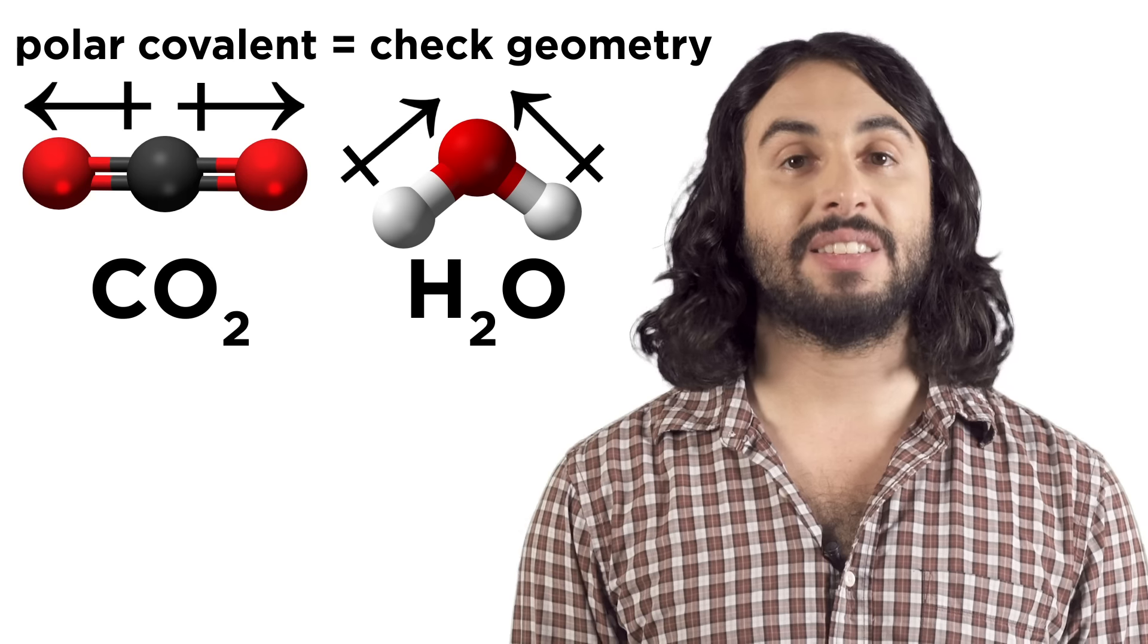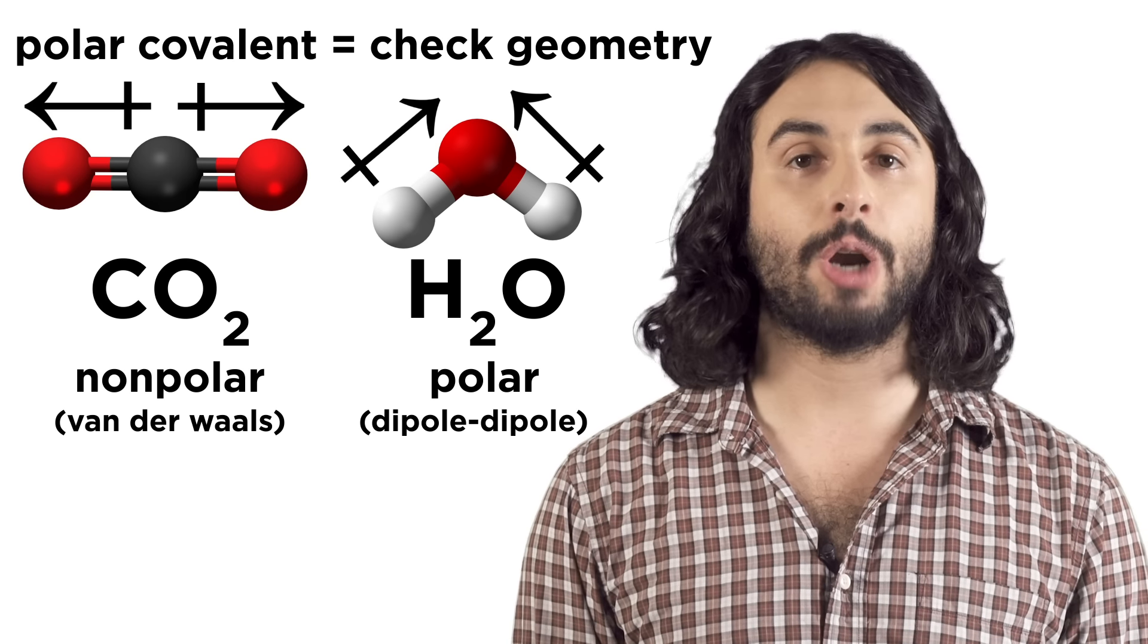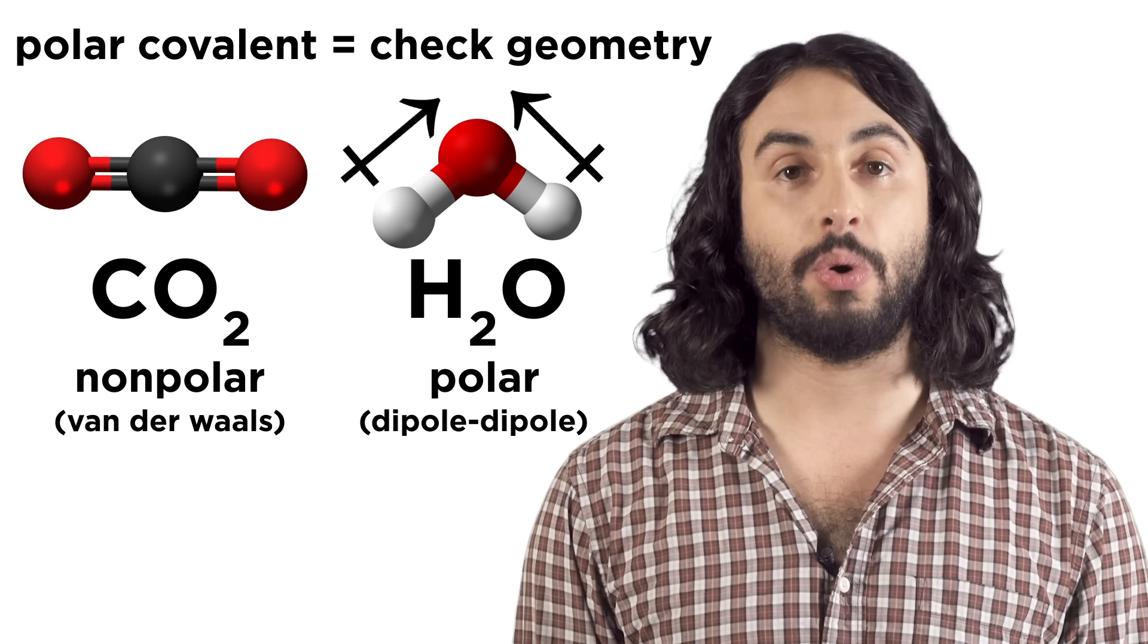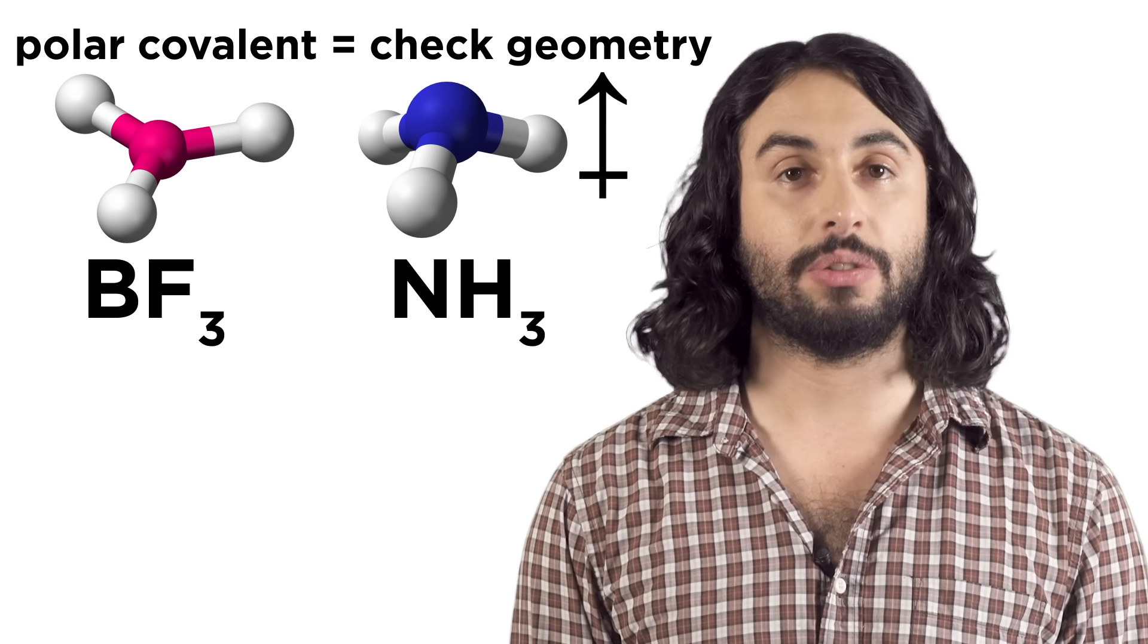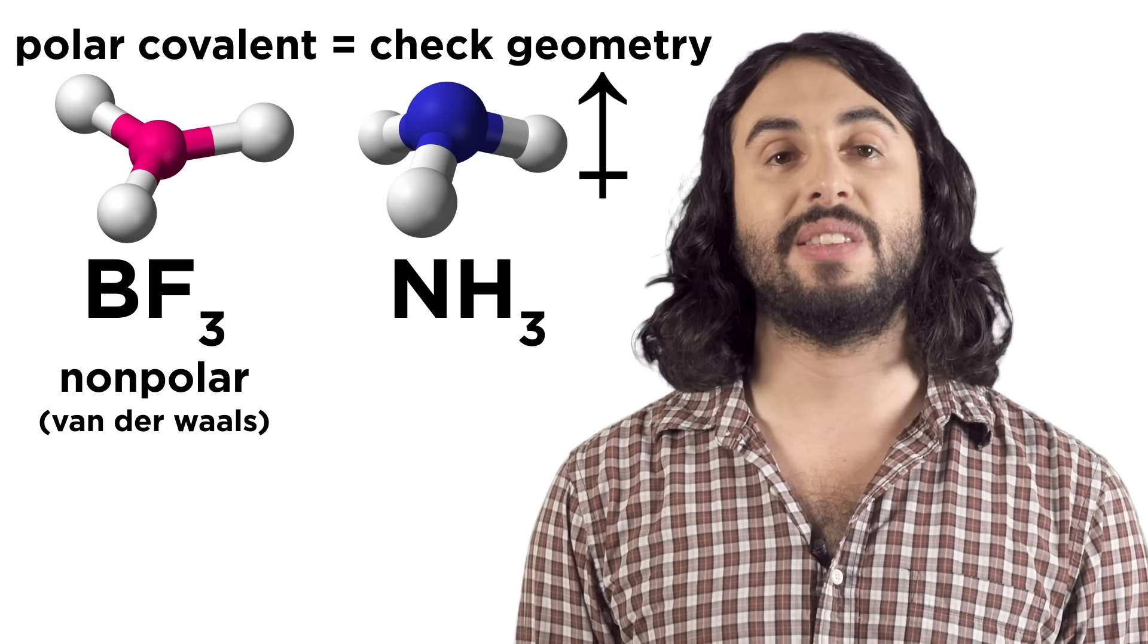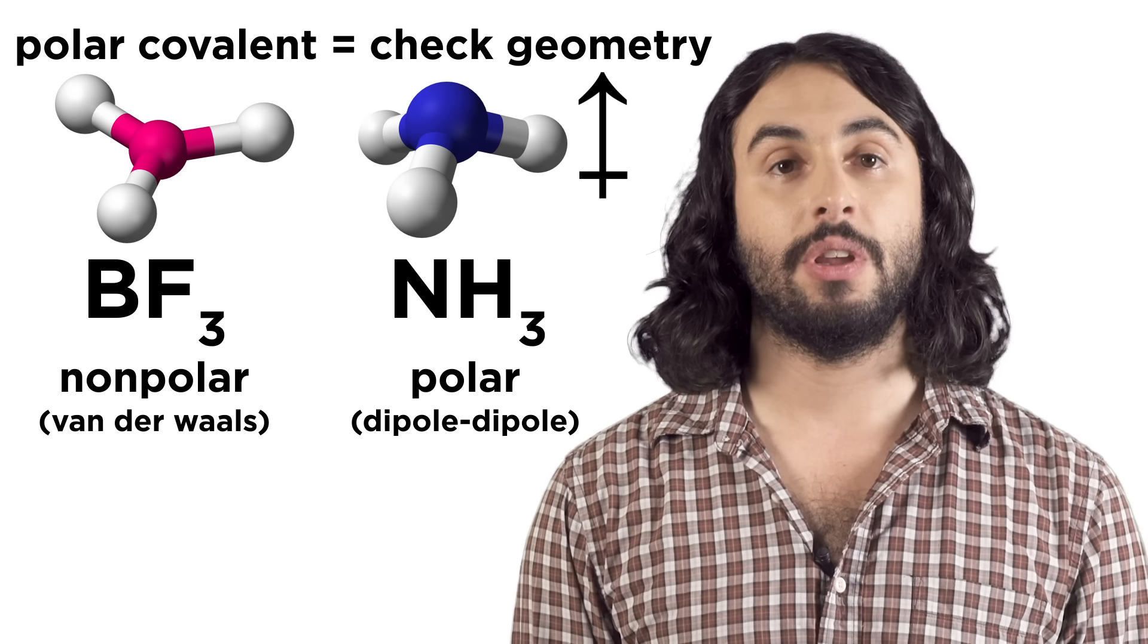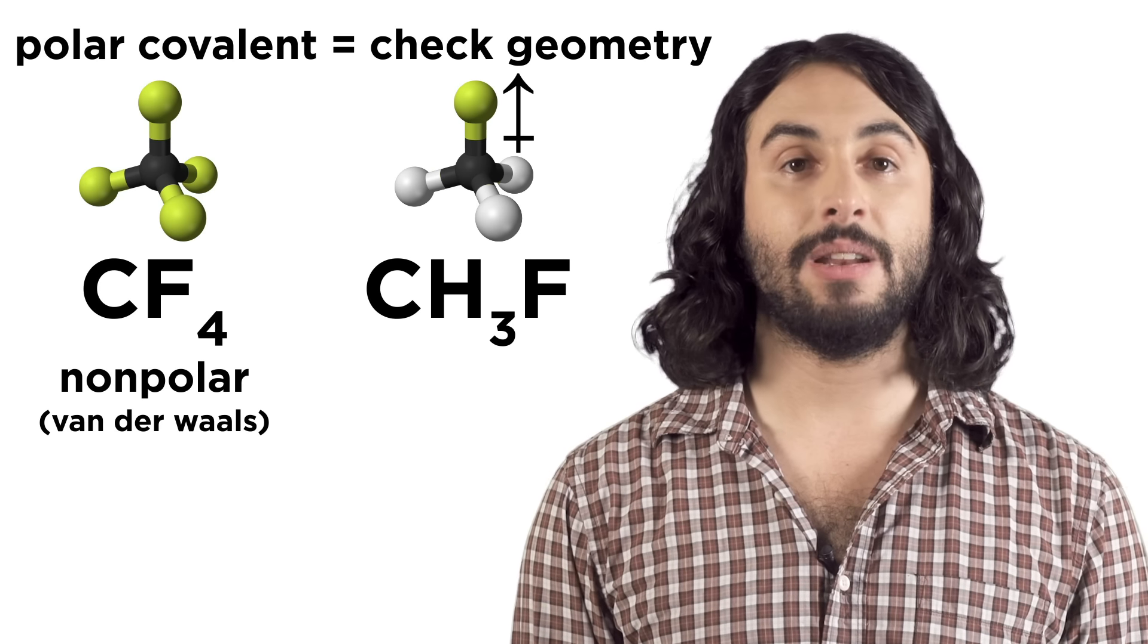For example, water has a dipole, but carbon dioxide does not, because even though carbon-oxygen bonds are polar, the direction of these polar bonds causes them to cancel each other out and the molecule is nonpolar overall. Similarly, compare BF3 with NH3. Again, the molecular geometry determines that this is nonpolar because the vectors precisely cancel each other out, but with ammonia, all the bonds point somewhat towards one direction, so ammonia has a dipole. CF4 is nonpolar again because of geometry.